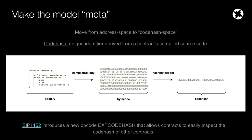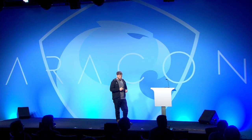EIP1152 introduces a new opcode called Xcode hash that allows contracts to easily inspect the code hash of other contracts. EIP1152 is supposed to be included in Constantinople. So now we have code hash — how do we use this to create a metamodel?